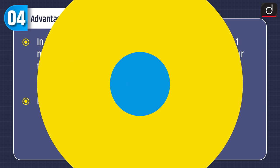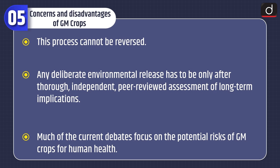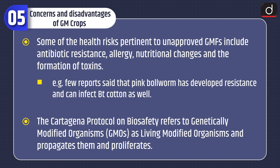Now let's discuss concerns and disadvantages of GM crops. This process cannot be reversed; any deliberate environmental release has to be only after thorough, independent, peer-reviewed assessment of long-term implications. Much of the current debate focuses on the potential risk of GM crops for human health. Some health risks pertinent to unapproved GMOs include antibiotic resistance, allergy, nutritional changes, and the formation of toxins.